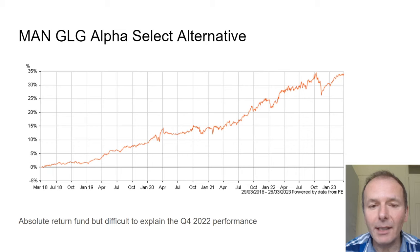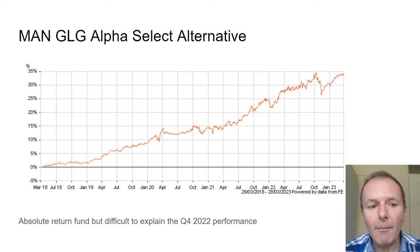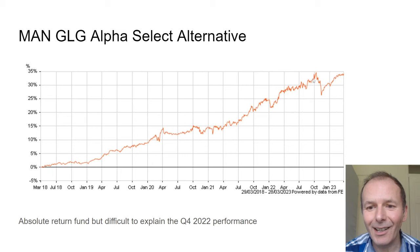You could look at something like this — a fund that goes up every year. It's an absolute return fund — I'll put a link in the description — called Man GLG Alpha Select Alternative. It doesn't go up massively every year but it does retain its value because it has simultaneous long and short characteristics.